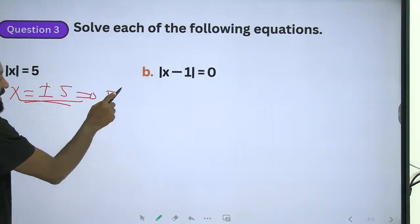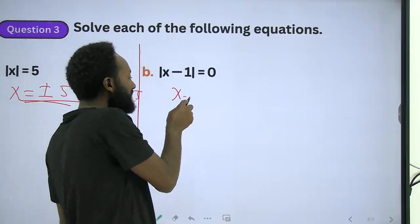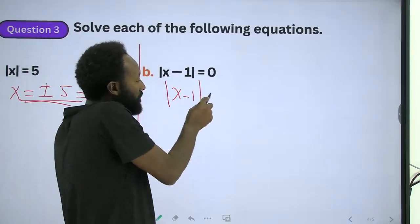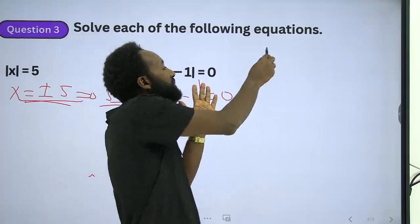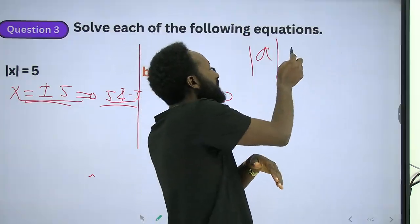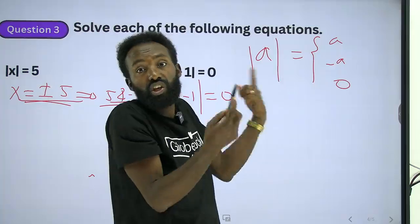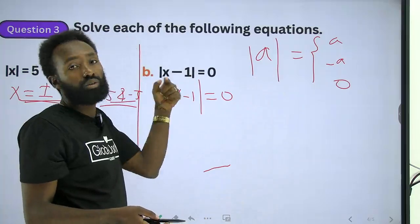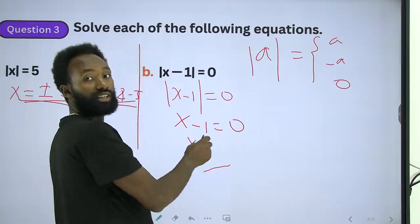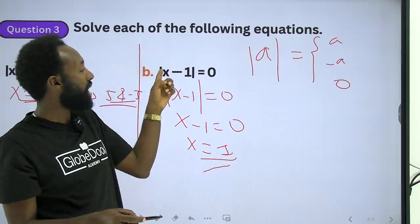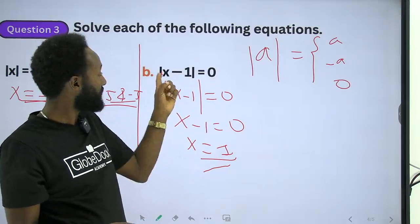This implies that x equals 5 and x equals minus 5. Next, let's try: absolute value of x minus 1 equals 0. Since the absolute value equals 0, we have x minus 1 equals 0, which gives x equals 1.